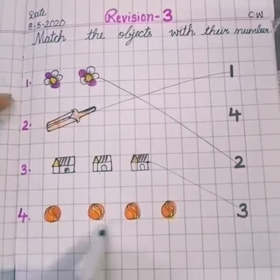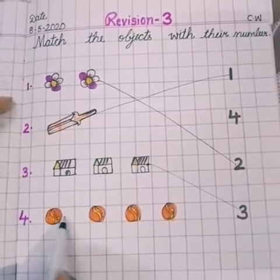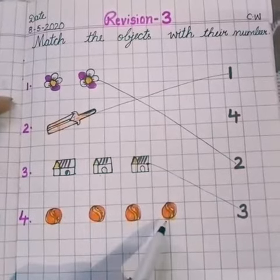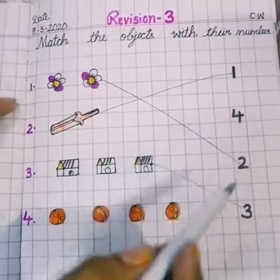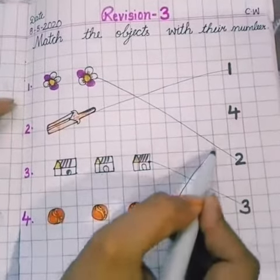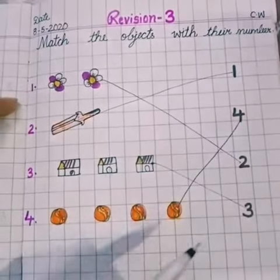How many balls are there? Count it. 1, 2, 3 and 4. Where is 4? Here is 4. So you have to match it with 4. It is a very interesting topic.